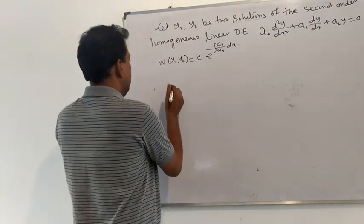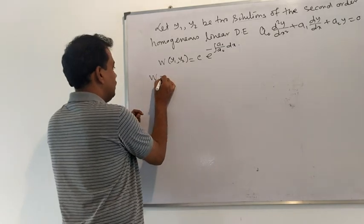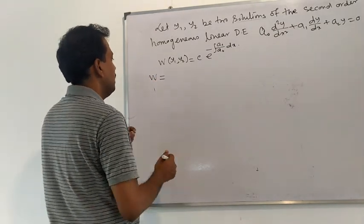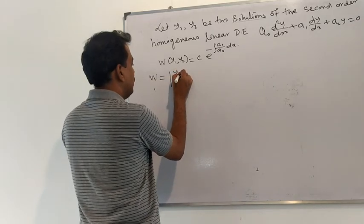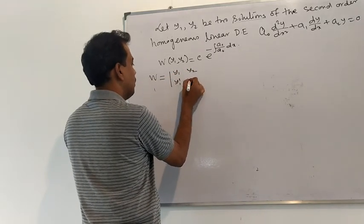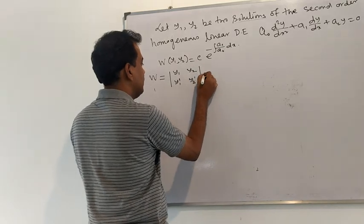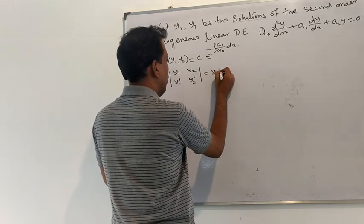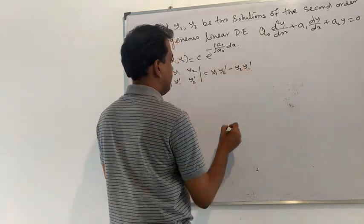The Wronskian of y1, y2, denoted by W, is the 2×2 determinant with first row y1, y2 and second row y1', y2'. This equals y1·y2' − y2·y1'.